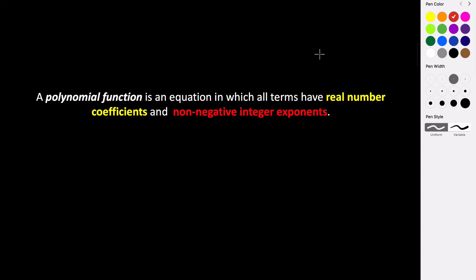Today we're talking about polynomial functions. A polynomial function is an equation in which all terms have real number coefficients and non-negative integer exponents. So basically what that's saying is all of the coefficients and the constant in our expression have to be real numbers — they can't be imaginary numbers — and our exponents, the powers of our variables, have to be non-negative integers.